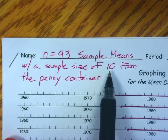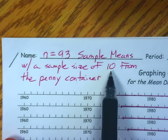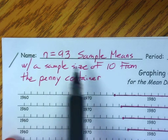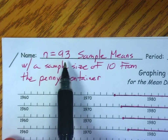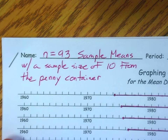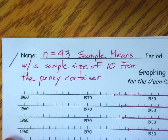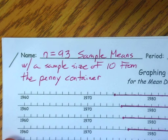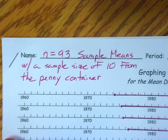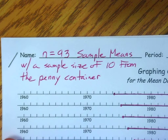Recently we passed the penny box around the class and we took random samples of size 10 — 10 pennies out of the penny box — and we found those sample means. We had a total of 93 of them. We have simple random samples of size 10; 10 times 10 is 100, which is certainly less than the size of our population of 518.